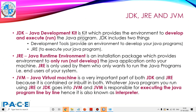JDK — Java Development Kit — is a kit which provides the environment to both develop and execute the Java program. JDK includes two things: development tools and JRE. JRE — Java Runtime Environment — is an installation package which provides an environment to only run Java applications, not to develop them. JRE is only used by those who only want to run the program — that is, the end users of your system.